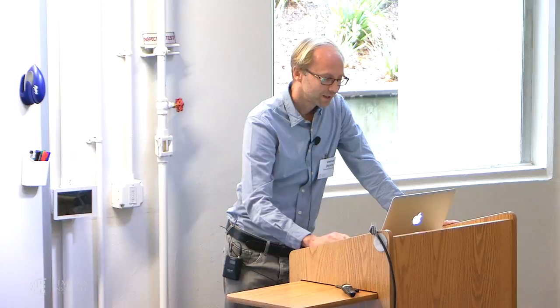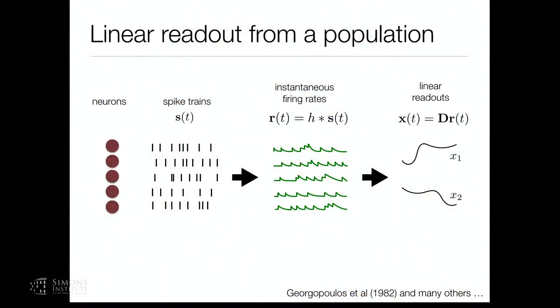Some of you are maybe more from computer science, so I should first define what I mean by a linear readout. You have a bunch of neurons and they're spiking — these are the spike trains. In the linear readout, you filter the spike trains, for instance by an exponential kernel or a Gaussian kernel, extracting what I would call the instantaneous firing rate. Then you linearly combine all these instantaneous firing rates through a decoder matrix to get linear readouts — those are analog quantities.